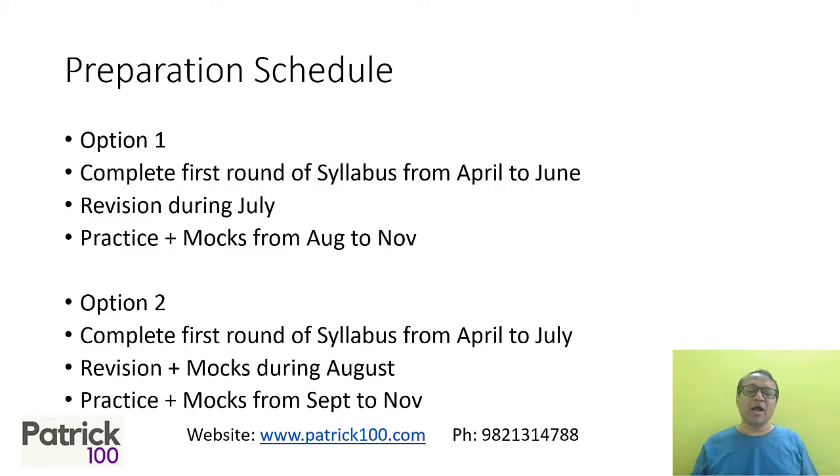There are two options. The first option is where you give enough time to prepare for the exam by completing the syllabus in three months, doing revision in July, then practice and mocks from August to November. Start your preparation and see how you proceed. If you feel you can complete the syllabus in three months, you can do the first option.